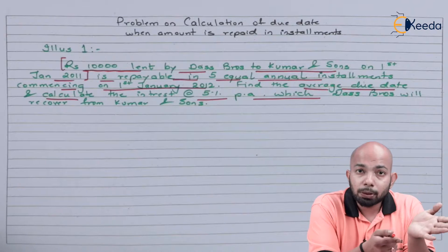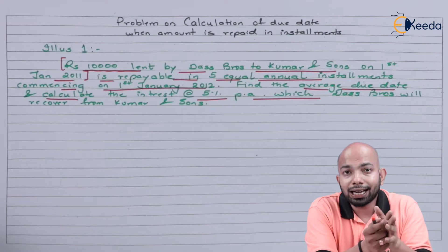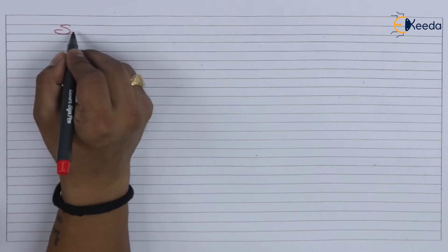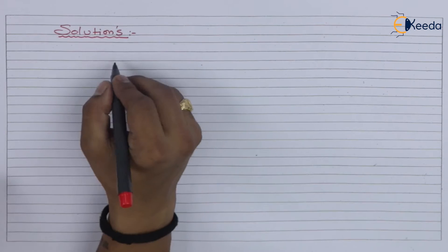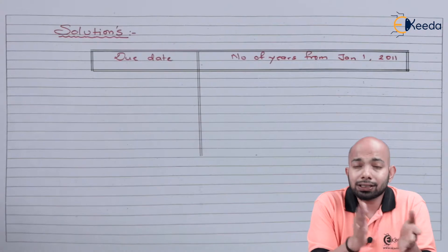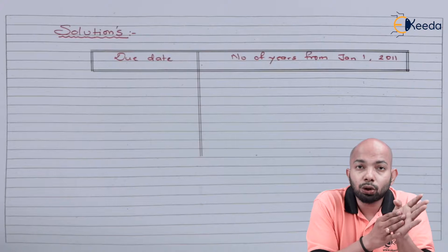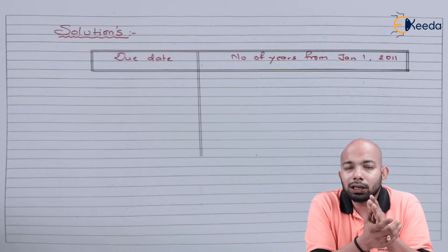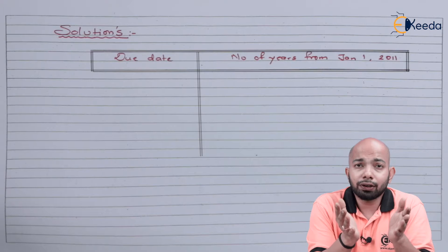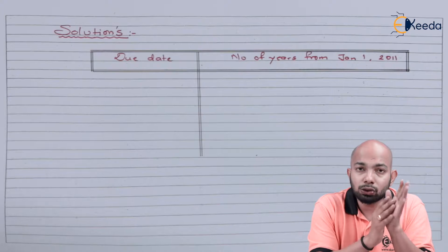There are two basic calculations: first, the average due date using the formula from the previous video, and then the interest to be recovered. The calculation here is taken in number of years rather than number of days, because these are five equated annual installments. Since one year has around 365 days, it would be very difficult to calculate in multiples of 365, so it's better to use number of years instead.